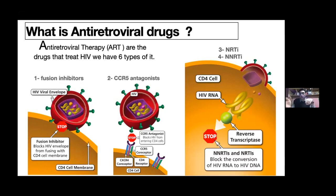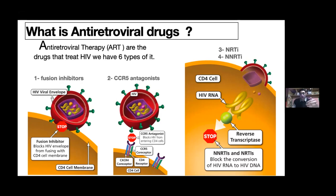The third type is nucleotide reverse transcriptase inhibitors. We create a modified nucleotide and deliver it to the cell. When reverse transcriptase tries to build DNA from RNA, it incorporates this modified nucleotide, and when it tries to add the next nucleotide, it cannot bind, so the DNA is not completely formed. The fourth type is non-nucleotide reverse transcriptase inhibitors, which directly inhibit reverse transcriptase activity, so no DNA forms and no new HIV copies are made.